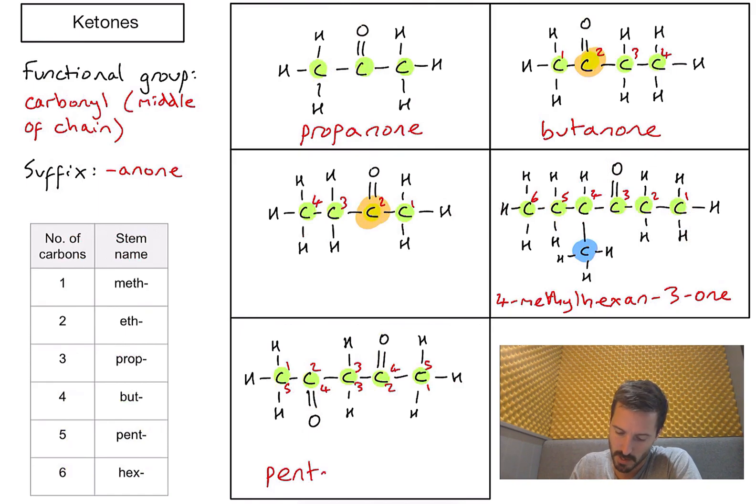This is going to be pentan-2,4-dione. And remember that di- is there to tell me that there's actually two of that functional group. Where do I find those? Well, we then give the numbers where those groups are actually found. And I think that's probably about it for ketones. Hopefully this video is of some help.